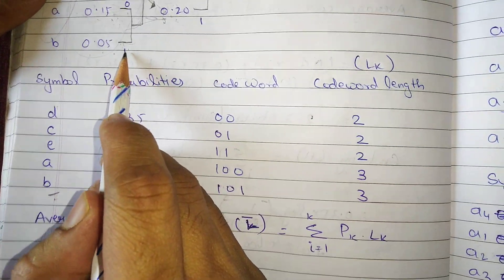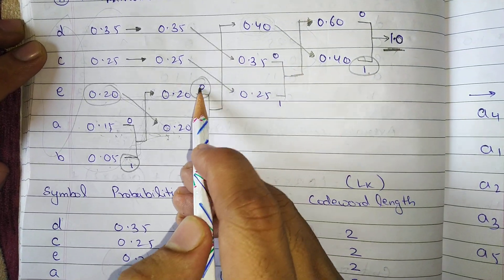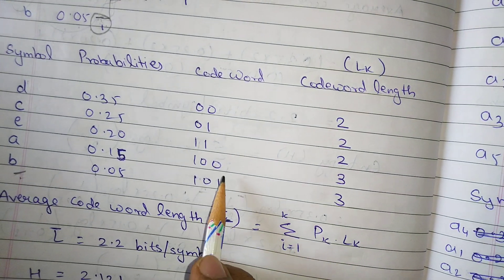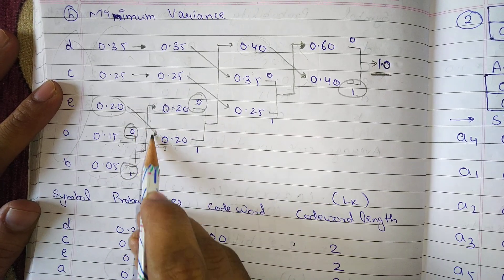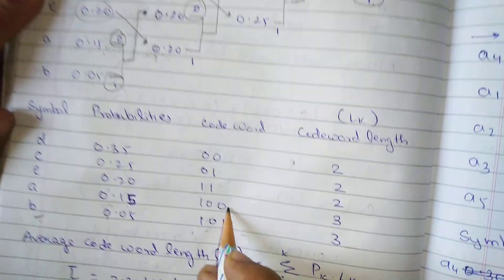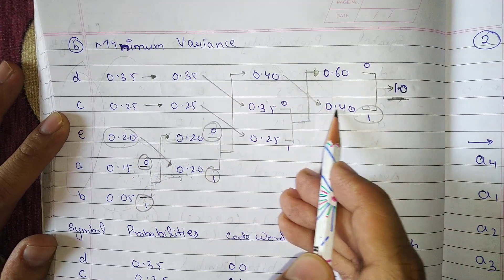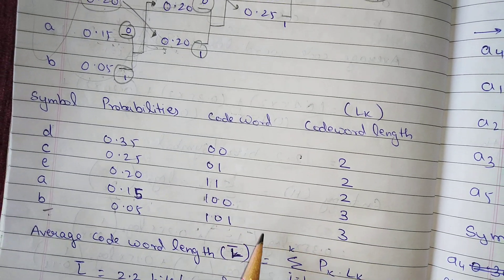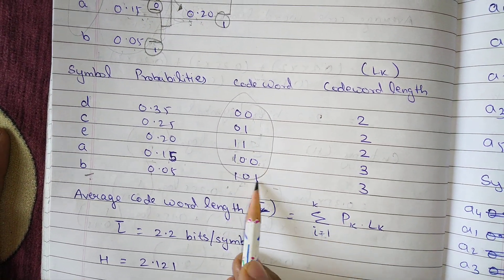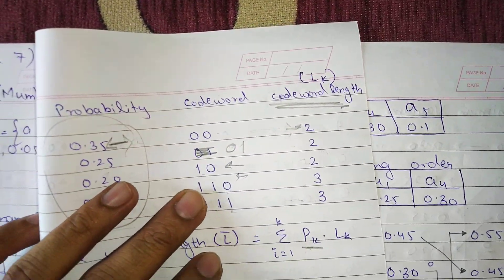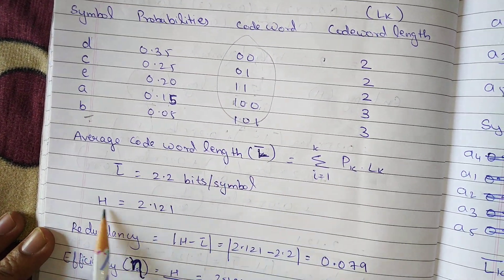Now let us find the codewords for the minimum variance code. For b it is 1, 0, 1 — so written backward: 1 0 1. For a it is 0, 0, 1 — backward: 0 0 1. For e it is 1, 1 — so 1 1. The codewords differ from the standard code; for example the last two were 1 1 0 and 1 1 1 before, but now they are different.